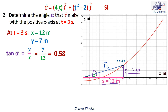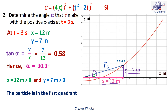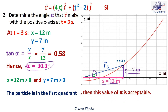Using the calculator gives alpha equals 30.3 degrees. Now, an important remark: we do not always accept the answer of the calculator. Since x equals 12 meters (positive) and y equals 7 meters (positive), the particle is in the first quadrant, so alpha is between 0 and 90 degrees. The calculator's answer is between 0 and 90 degrees, so this value of alpha is acceptable. In other questions, if the answer of the calculator is not acceptable, we just add 180 degrees to that answer.